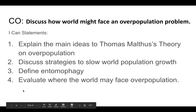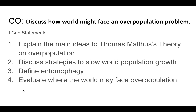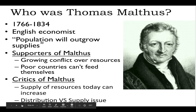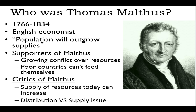Moving on to discuss overpopulation problems, the objectives are: explain the main ideas of Thomas Malthus, discuss strategies to slow population growth, define entomography, and evaluate where the world may face overpopulation. Thomas Malthus was an economist famous for stating, during the mid-1700s Industrial Revolution, that the number of resources was not keeping up with overall population growth, creating conflict over resources — most common in poor countries today.